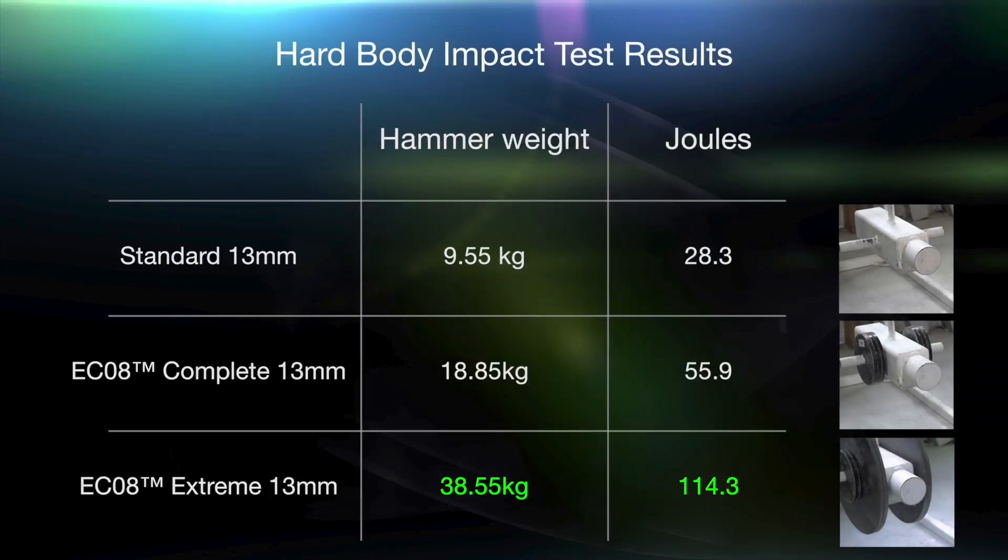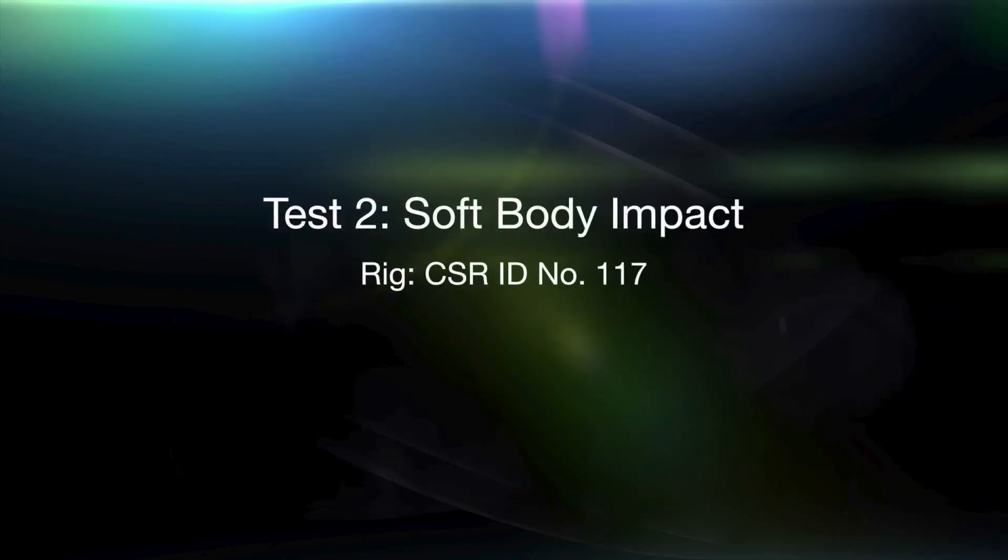With over twice the energy required to penetrate EC08 Extreme compared to EC08 Complete, Extreme is the clear multi-function plasterboard choice for high, hard-body impact risk situations. The second test is for soft body impact.